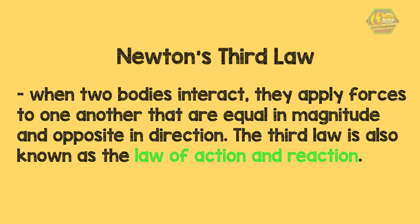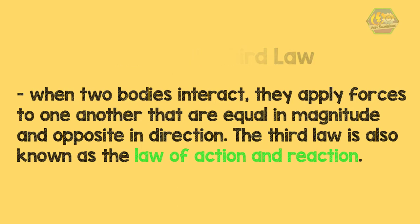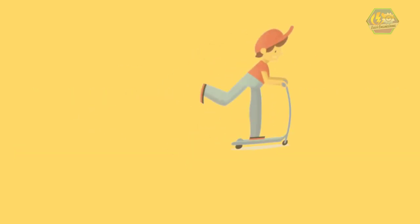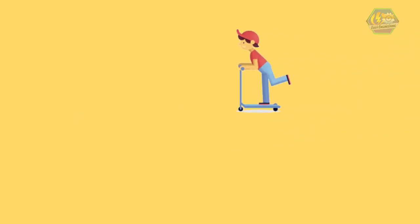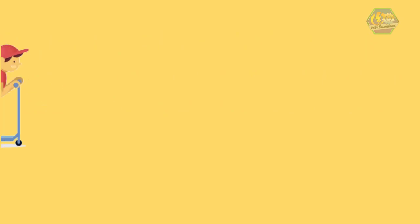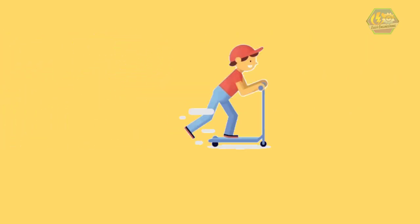The third law is also known as the law of action and reaction. It means that when you apply a force on something, it gives back an equal amount of reaction force. For example, if you have a skateboard and you press your feet against the floor, the floor applies an equal amount of force back to your feet — that is why you can move.